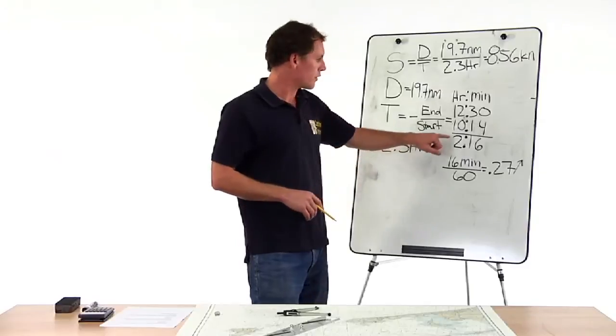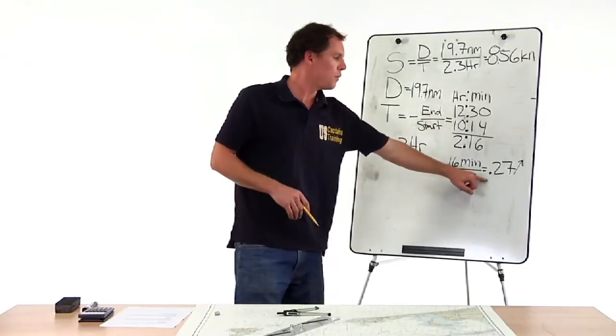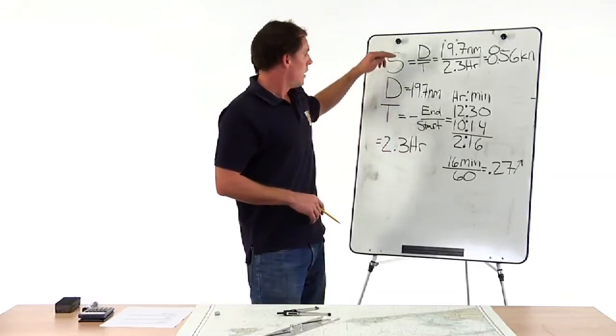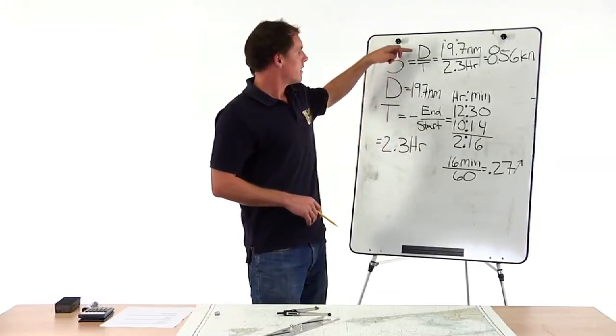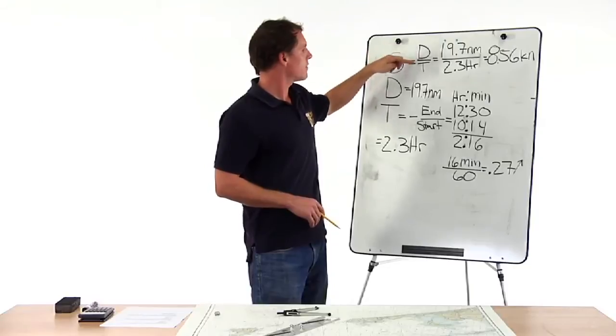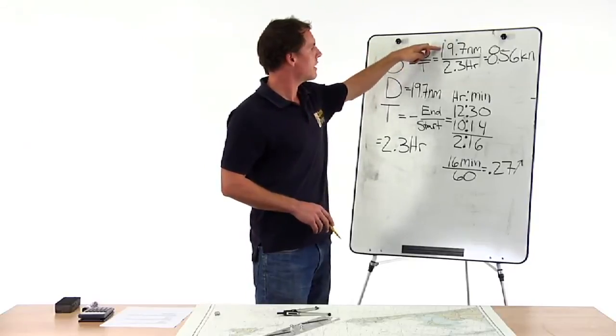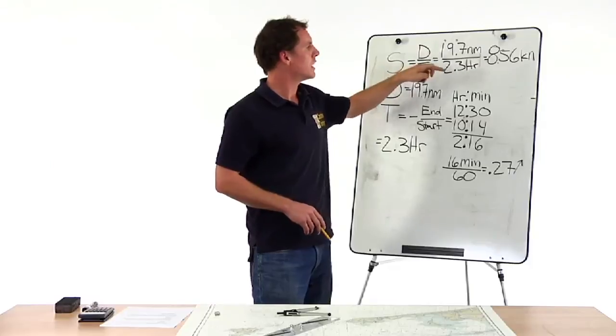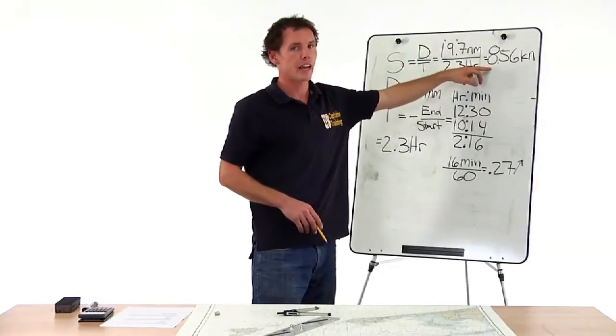So we end up with two point three hours and a distance of nineteen point seven. Speed equals distance divided by time. Nineteen point seven nautical miles divided by two point three hours equals eight point five six knots.